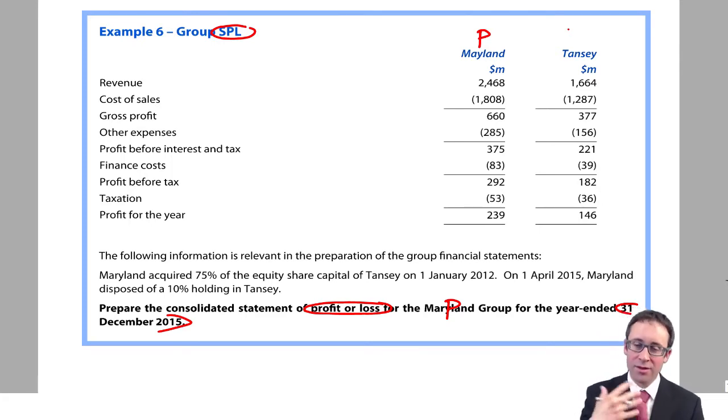What we can see there is you've got the statement of profit or loss for both the companies, Maryland, the parent, Tansy, possibly the sub. They are in millions of dollars, as you're likely to see within the exam. And you can see there at the bottom, you've got the profits for the year for each of those two entities.